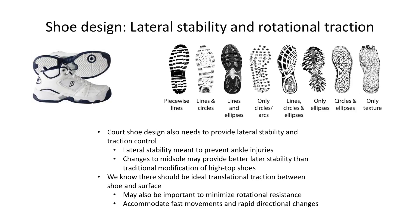A further consideration in court shoe design is the ability to provide lateral stability and traction control. Lateral stability is meant to prevent ankle injuries. Although a common modification is a high cut shoe, high top shoes may not decrease the incidence of ankle sprains. It is not completely known yet, but it is possible that changes to the midsole instead may affect rear foot stability and provide better lateral stability. There may be an ideal translational traction between shoe and surface, but it may also be just as important to minimize rotational resistance to accommodate the rapid movements and fast directional changes required for tennis. As surface properties vary from grass to clay to hard court, it is often recommended that surface-specific shoes are utilized.